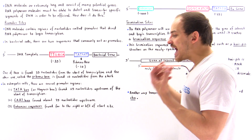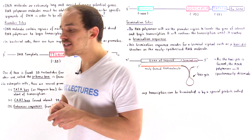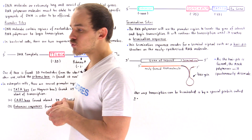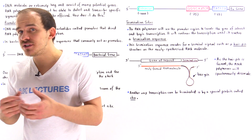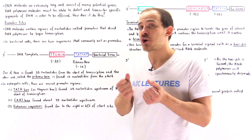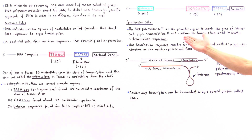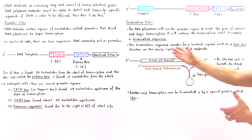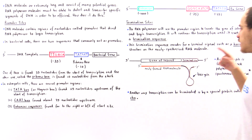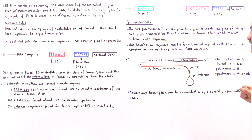The question is: how does the RNA polymerase know when to stop transcription? In the same way that promoter sections initiate transcription, we also have termination sections — termination sites or termination sequences — that terminate or end the process. The RNA polymerase will continue transcribing until it reaches a termination sequence.